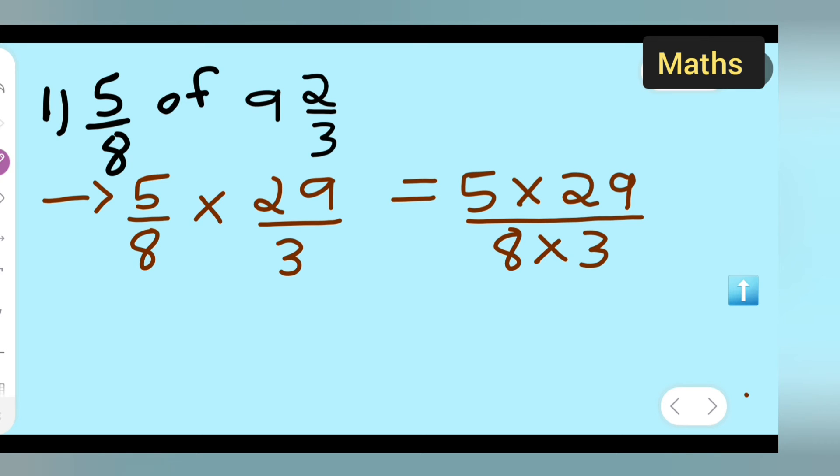Now you can multiply this and see what answer you're getting. 5 multiplied by 29, the answer is 145 upon 8×3 which is 24.